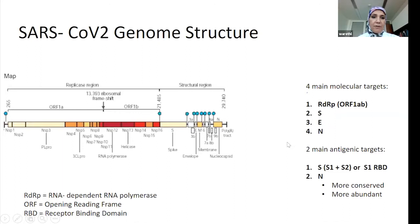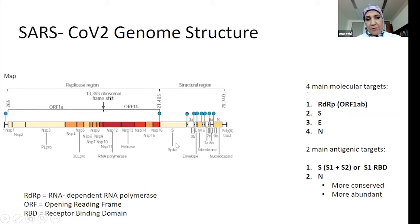In terms of the gene structure of SARS-CoV-2, it can be divided into two big regions: the region responsible for viral replication, including the RNA-dependent RNA polymerase with the most important genes being ORF1A and ORF1B, and the rest of the genome which produces the structural proteins of the virus, such as the envelope protein and the nucleocapsid protein.